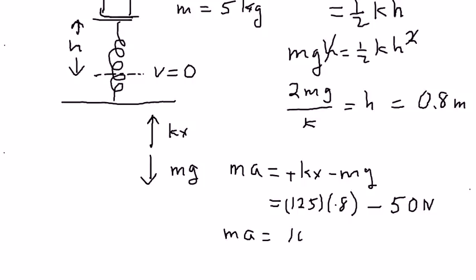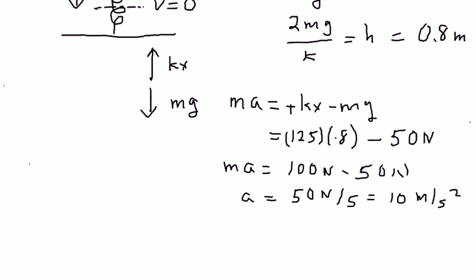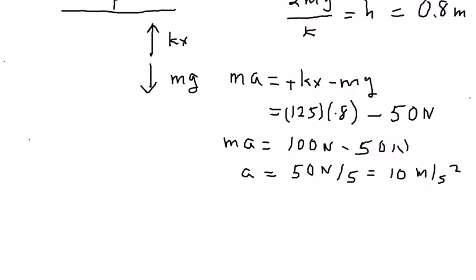If you do the math out it turns out that this looks like 100 newtons minus 50 newtons, and so there's an acceleration of 50 newtons divided by 5 of 10 meters per second squared. What this means is that the block at that point will accelerate back up again.